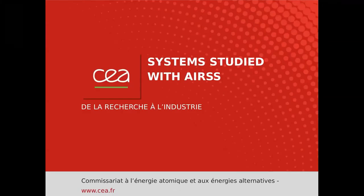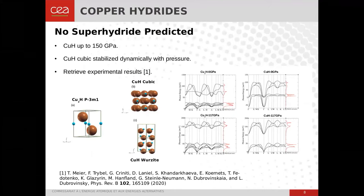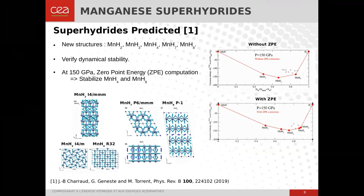Focusing on systems studied with ab initio random structure searching: we first investigated copper hydride and found that up to 150 GPa, no superhydride is formed. The maximal stoichiometry reached is CuH. We also found that cubic CuH is dynamically stabilized thanks to high pressure, and all these results are confirmed by recent experimental studies. We also studied binary manganese superhydrides, where we were able to predict new structures like MnH7 and MnH8. We checked their dynamical stability, and at 150 GPa, the zero-point energy contribution due to the vibration of atomic hydrogen leads to the stabilization of MnH4 and MnH8 at this pressure.